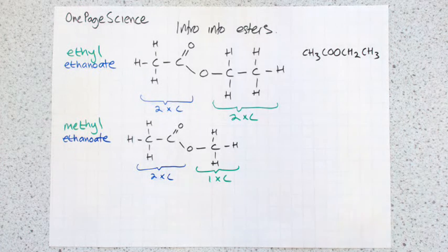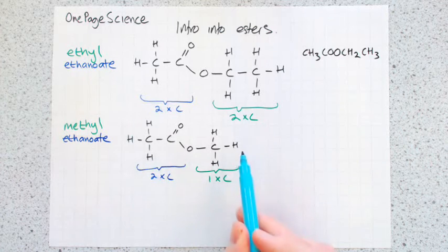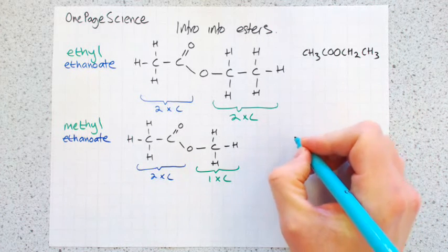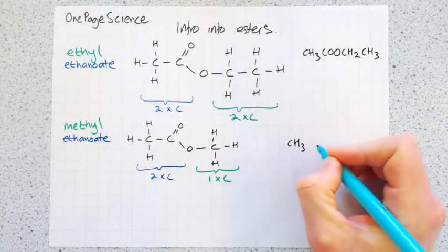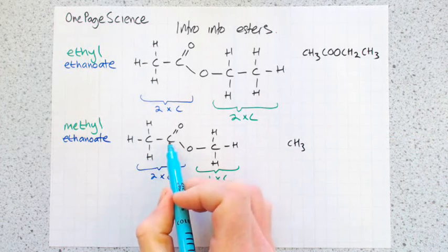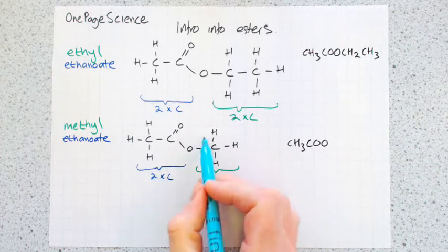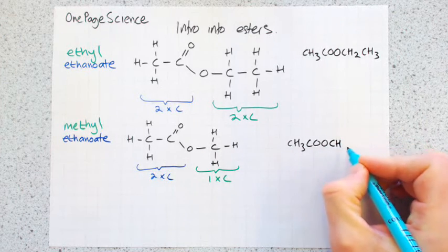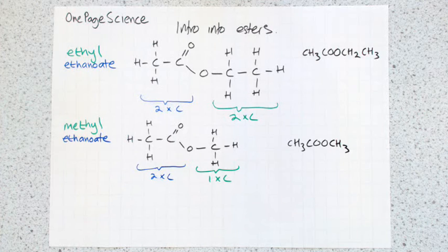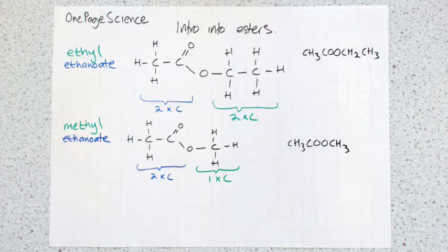And then the way we can do that as a structural formula, we're going to start from the left, work the way across. So CH3 for that bit, COO, and the last part is CH3. We'll do just one more example of these just so you get an idea.